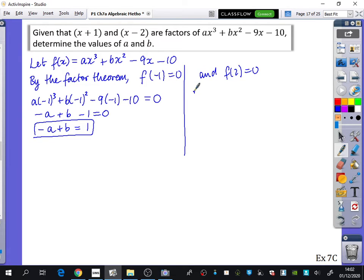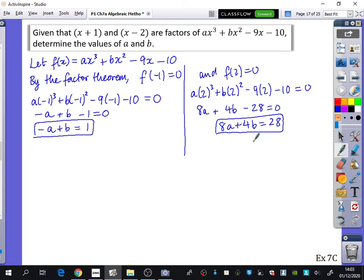Now I'm going to do the same thing for this one. I now know that f(2) = 0. In other words, a(2)³ + b(2)² - 9(2) - 10 = 0. 2 cubed is 8, that's 8a. 2 squared is 4. 9 times 2 is minus 18, minus 10, that's minus 28. In other words, 8a + 4b = 28. And then we'll do simultaneous equations with these.